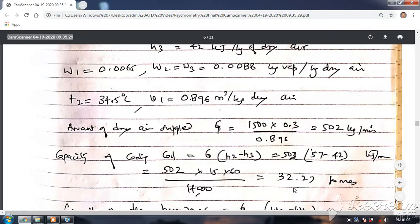Then amount of dry air supplied: m is equal to 1500 people into 0.3 meter cube divided by specific volume, this is 502 kg per minute. Capacity of cooling coil is this m into h2 minus h3, that is 502 into 57 minus 42, so this is 502 into 15 divided by 60 divided by 14,000, so you will get as directly tons of refrigeration.